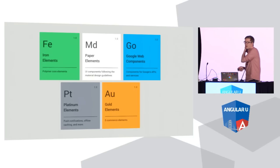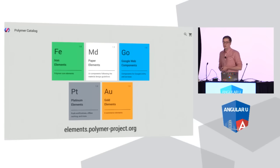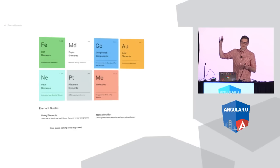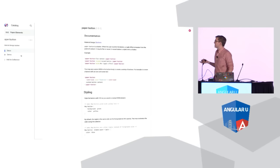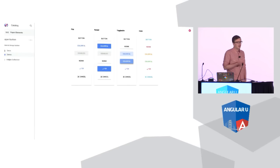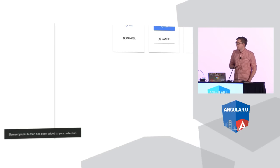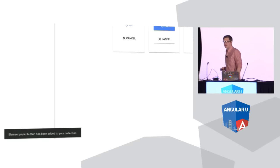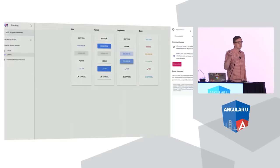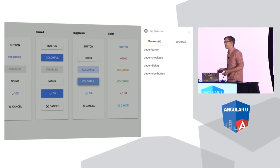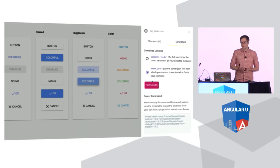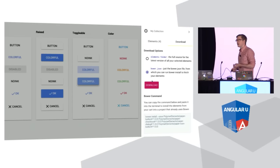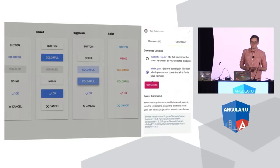Those are the element product lines we're shipping today. If you want to browse the entire collection, you can go to elements.polymerproject.org. The catalog lets you search for elements by product line or by tag, browse through them, read their documentation, check out their demos. One cool feature is that you can add elements to a collection — as you're going around finding elements you like, you add them to your collection. When you're ready to check out, you can click a button in the top right and download all of your elements and their dependencies as either a zip bundle or a Bower.json file you can check into source control.